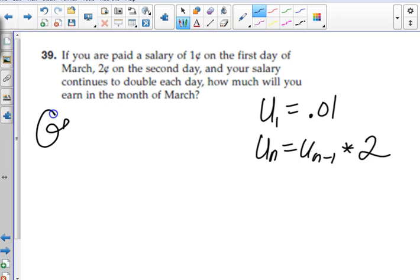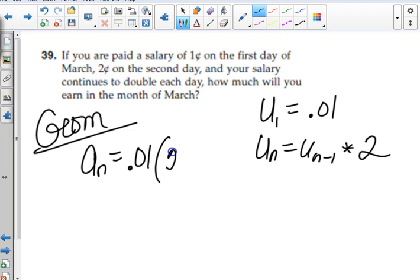So, U sub 1 equals 0.01. I'm going to do pennies. Yes. Or dollars. And U sub n equals U sub n minus 1 times 2. This is geometric. If you wanted to just figure out what you made the 31st day. Just the 31st day. You could do this. Yes.